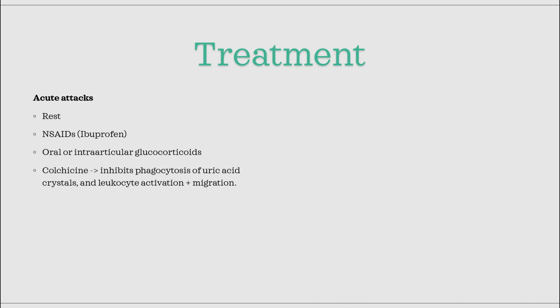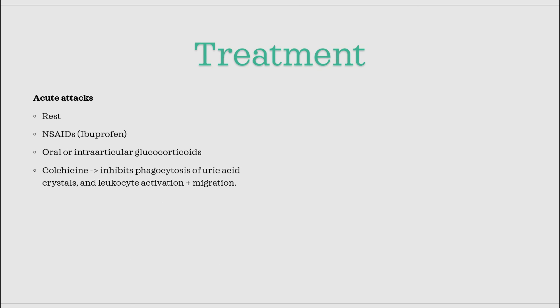Now to treatment. In the first acute attacks, treatment should be based on symptoms. Rest is always recommended, together with NSAIDs like ibuprofen. If NSAIDs and rest are not sufficient, glucocorticoids or colchicine is given. Colchicine has an effect that inhibits migration and activation of neutrophils, and it also inhibits phagocytosis, effectively slowing down the inflammation. Glucocorticoids is a last resort treatment given either orally, or in extremely severe cases, intra-articularly. Remember, the last two are given only if NSAIDs and rest are not sufficient.